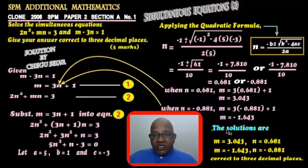Therefore, the solutions are: m equals 3.043, n equals 0.681; and m equals negative 1.643, n equals negative 0.881, correct to 3 decimal places. As simple as that. Thank you!